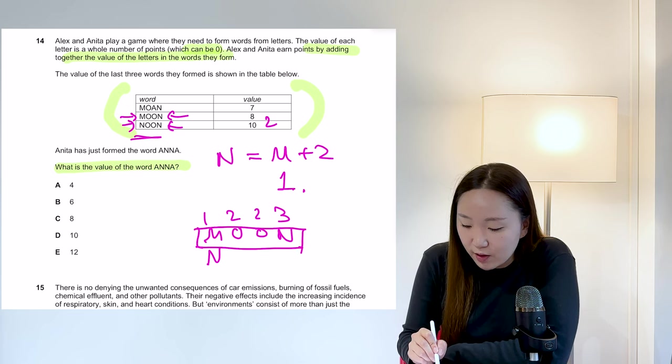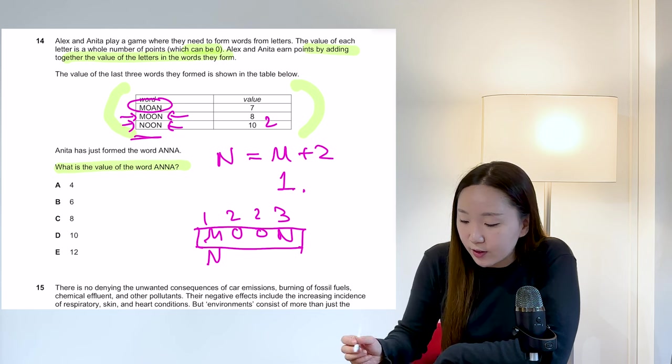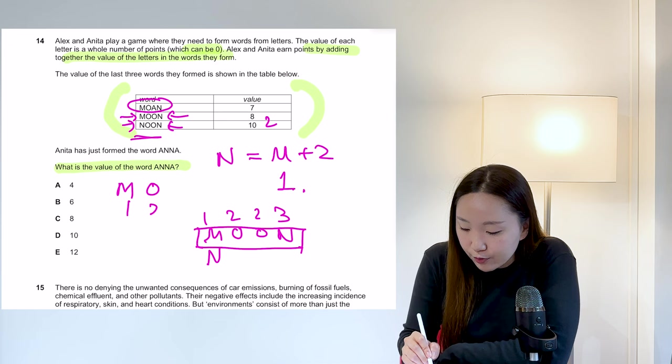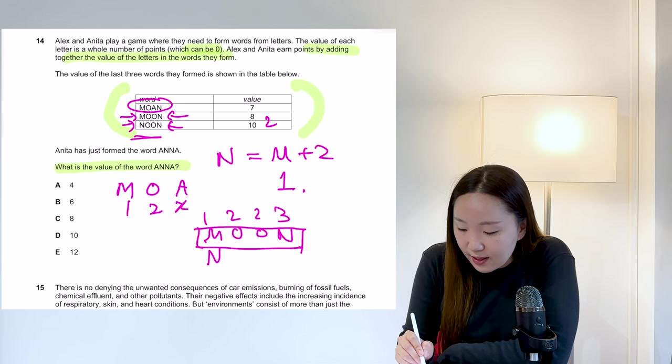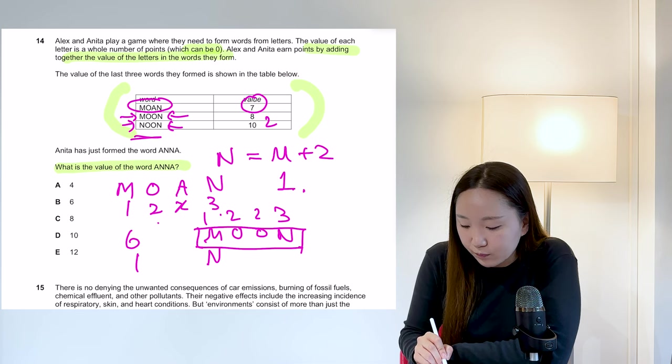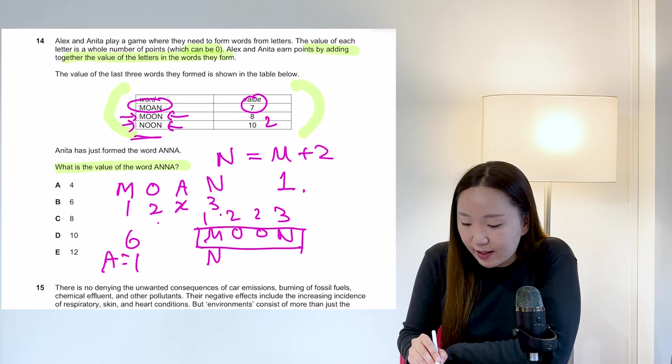We just have to now find the letter A. So we can just look at moan. So we've got M one, O two, A X, and then N three, and that gives six. So A would be one. And then we just added up A is there's two A's and two N's. So it would just be eight.